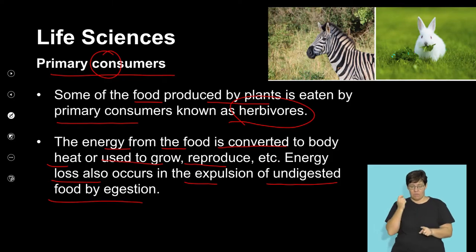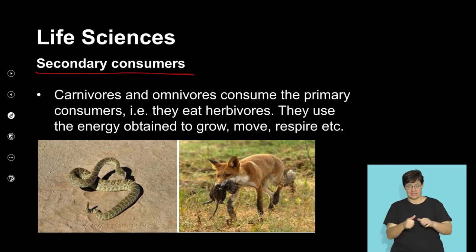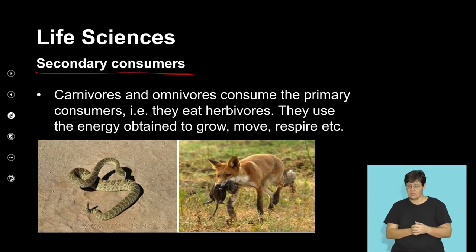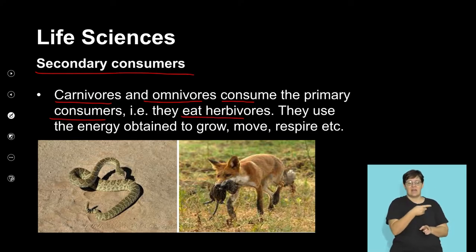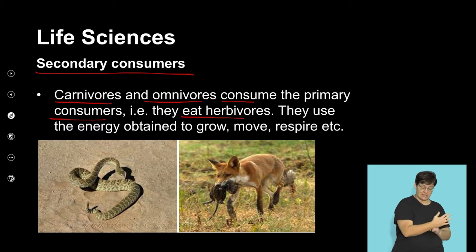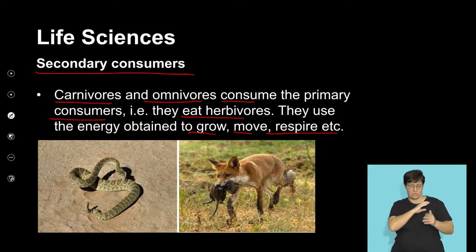Energy moves from the autotrophs to the primary consumers. The next level in a food chain would be secondary consumers — carnivores and omnivores that consume the primary consumers, namely the herbivores. They use the energy obtained from them to grow, move, respire, and carry out basic metabolism.